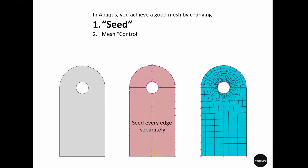Alternatively, you can seed every edge available to you separately. You can define that the seeds in each edge have the same distance, or you can define that the seed distance in an edge changes as it goes forward. After the mesh is done, the elements cross the seed points at the edge. What happens inside the part is not defined by the seed — that is defined by mesh control.